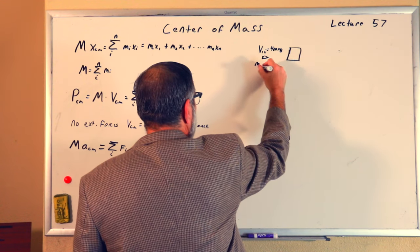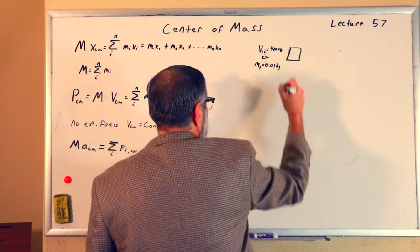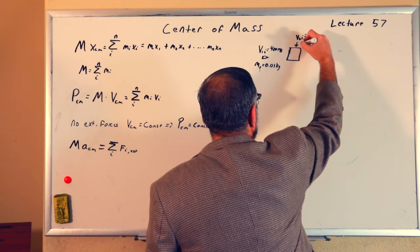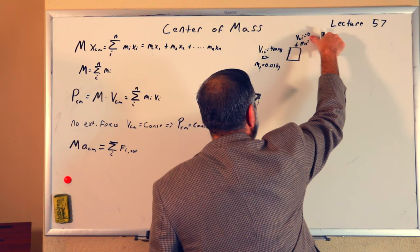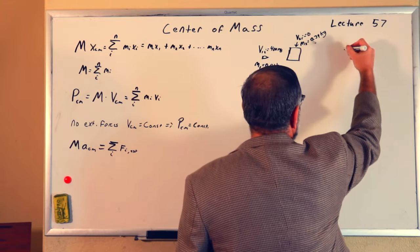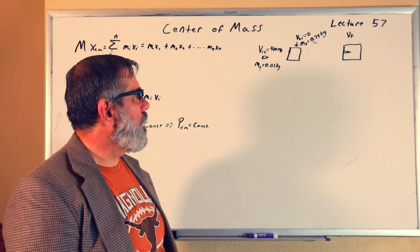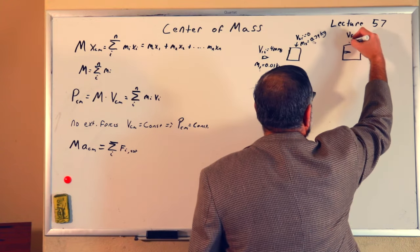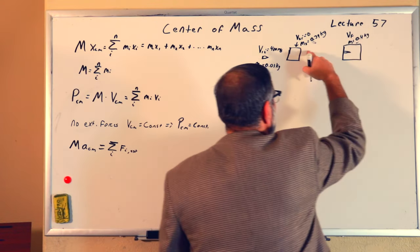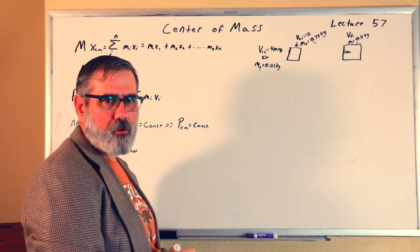M1, the bullet, is equal to 0.01 kilograms — 10 grams. The block had V2 initial equal to zero, and its mass M2 was 0.39 kilograms — 390 grams. After the bullet impacts and embeds itself into the block, they move together at the same final velocity. The combined mass M equals 0.4 kilograms — 390 grams plus 10 grams equals 400 grams. You probably remember this problem from the lecture on inelastic scattering.